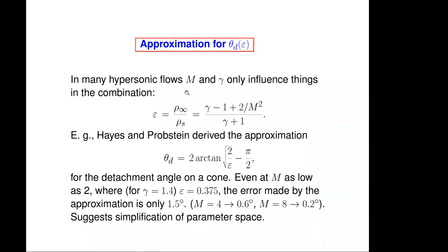Now, an interesting feature of hypersonic flows is that many cases exist where the Mach number and the specific heat ratio don't separately influence the problem, but only this function of them, which is the density ratio, inverse density ratio across a normal shock. For example, Hayes and Brobstein derived a nice approximation for the detachment angle, which is a very simple function of epsilon. And this is very good, even down to as low as a Mach number of two, for which epsilon is 0.375. And the error there is only one and a half degrees. But at Mach 4, we go down to 6.6 degrees and Mach 8, 0.2 degrees. So this already suggests a simplification of the parameter space.